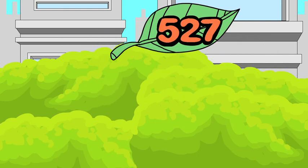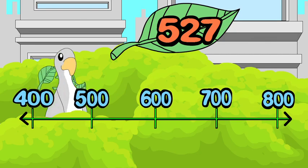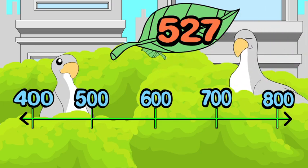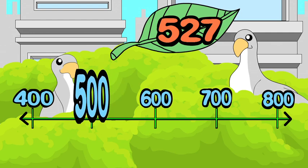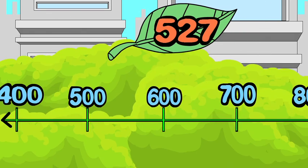Let's round 527 to the nearest hundred. Step 1: figure out what benchmarks to use. To the nearest hundred tells you to choose the hundred before 527 and the hundred after 527. 500 is the lower benchmark and 600 is the higher benchmark.